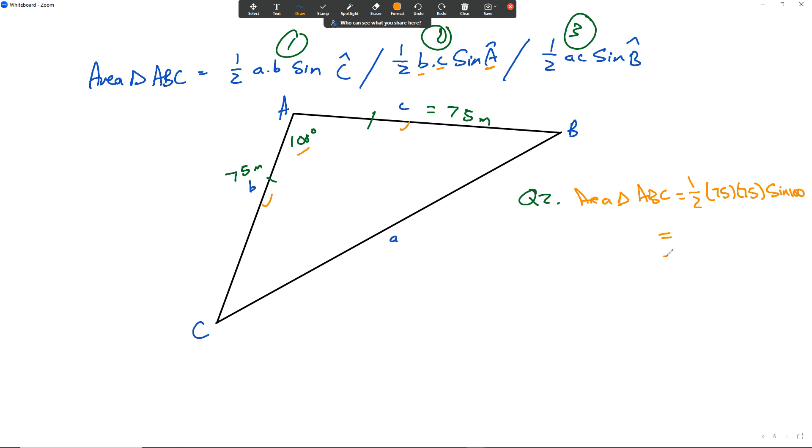Put it on a calculator, and it will shoot out the answer. Let's see if this one's correct. 0.5 times 75 times 75 times sine 100. That comes to 2,769.77 meters squared.